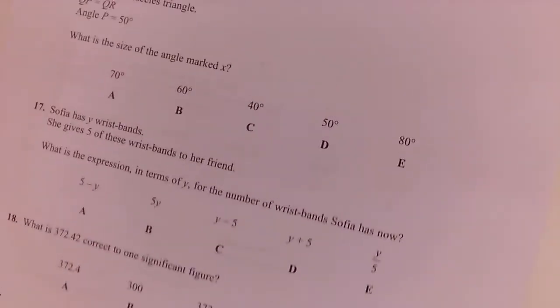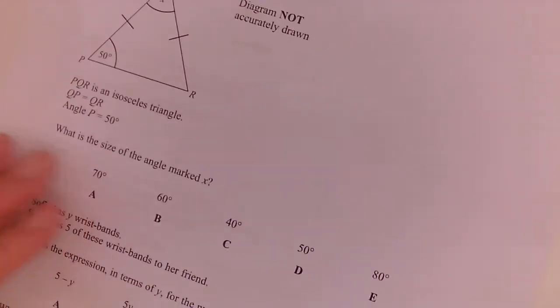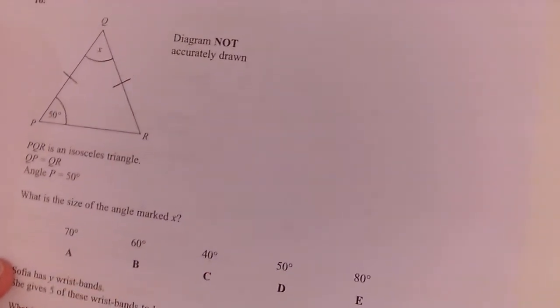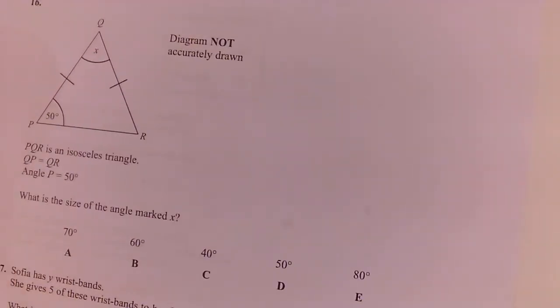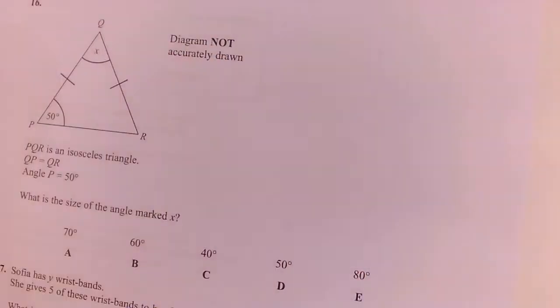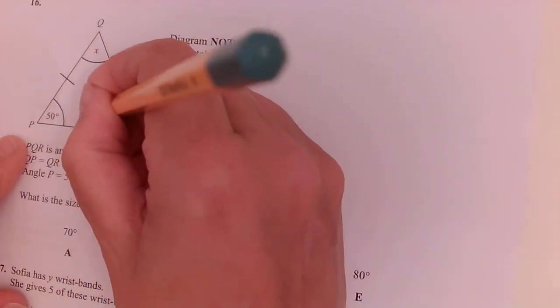Question 16. Triangle PQR is an isosceles triangle, and QP is equal to QR. So those are my arms. So my arms. So the base angles of an isosceles triangle are the same. So those two are the same.